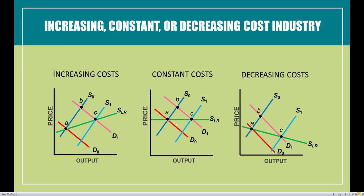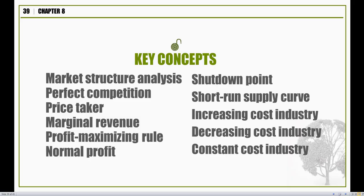So there are three different shapes of our long-run supply curve — it really depends on the type of scale. We have the increasing cost industry, associated with diseconomies of scale and an upward-sloping curve. We have the decreasing cost industry, associated with economies of scale and a downward-sloping curve. And the constant cost industry, associated with constant returns to scale and a horizontal line. This wraps up Chapter 8 on perfect competition. Next, we'll take a closer look at monopoly — the market structure with the least competition and the most market power. Great work for this chapter; I'll see you next time.